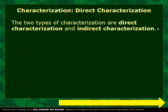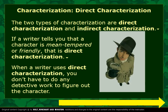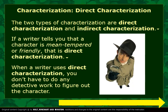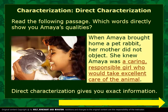If a writer tells you that a character is mean-tempered or friendly, that's direct characterization. When a writer uses direct characterization, you don't have to do any detective work to figure out the character — the writer has already told it to you. So read the following passage: when Amaya brought home a pet rabbit, her mother did not object. She knew Amaya was a caring, responsible girl who would take excellent care of the animal. The highlighted words give us exact information about Amaya that we don't have to guess about.